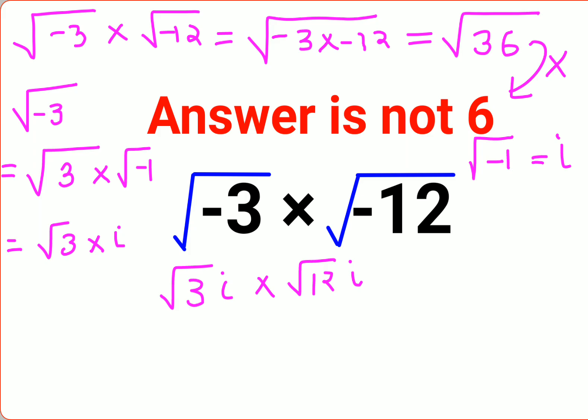So basically this became √3i and this became √12i. Now, because both these numbers are now positive, you can directly put them under one root, which gets you 12 times 3.